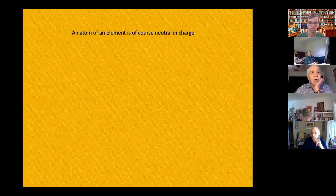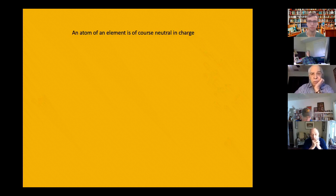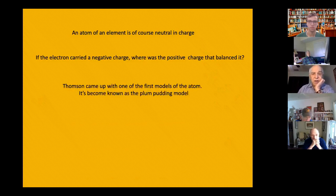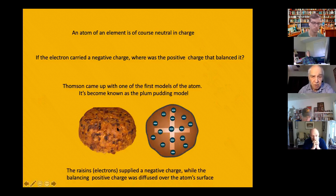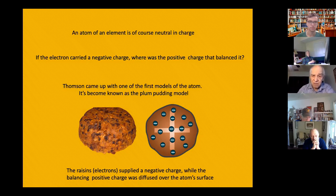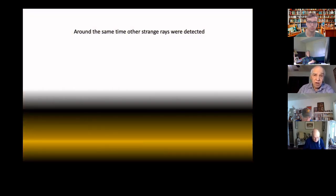Now the question was: we have a particle that's a constituent of an atom and it has a negative charge. The atom has to be neutral in charge by itself — so where is the positive charge? Thomson came up with one of the first models of the atom, known as the plum pudding model. On the left you see good old English plum pudding with raisins in it. These negatively charged electrons constitute a certain total of electrical charge that has to be balanced by a positive charge. That positive charge he imagined to be just distributed and diffused over the entire surface of the atom. This was called the plum pudding model, but there were other strange rays being detected toward the end of the 19th century.